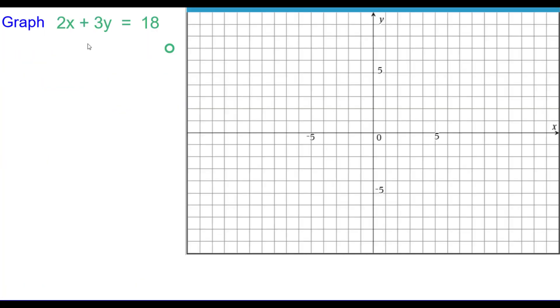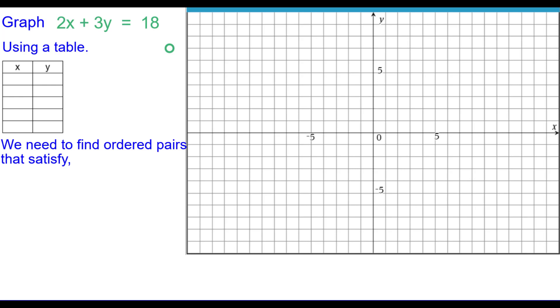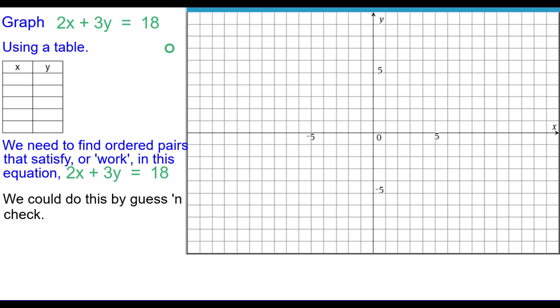Here we're going to graph 2X plus 3Y equals 18. We're going to use a table the first way. So we'll create a table and we need to find ordered pairs that satisfy or work in this equation, 2X plus 3Y equals 18. We could do this by guess and check. For example, we could pick a number like 5 and substitute that in for X and then try to find the value for Y. So we'd like you to pause to answer this and then resume when you're finished.